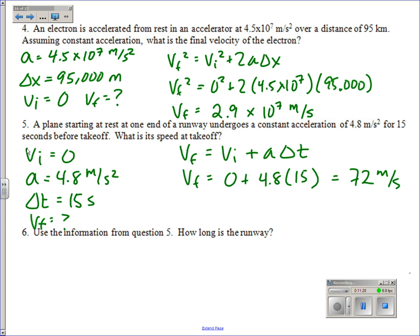Use the information from question five: how long is the runway? We would like delta x. Now here you'll notice we have more than one formula that we could choose from. You could solve this problem with this equation, or you could solve it with this one, average velocity. You should get the same answer either way.